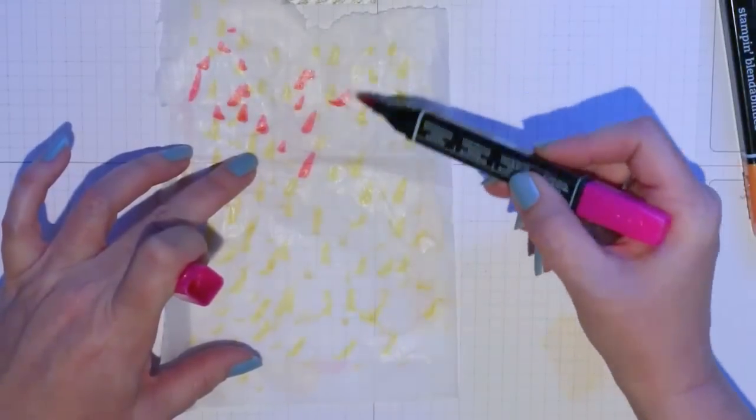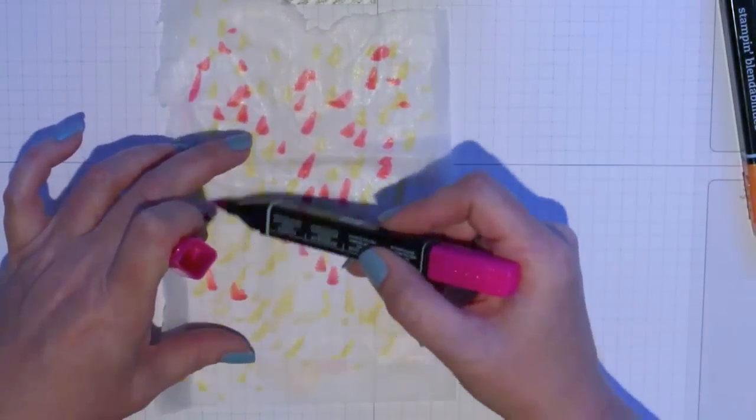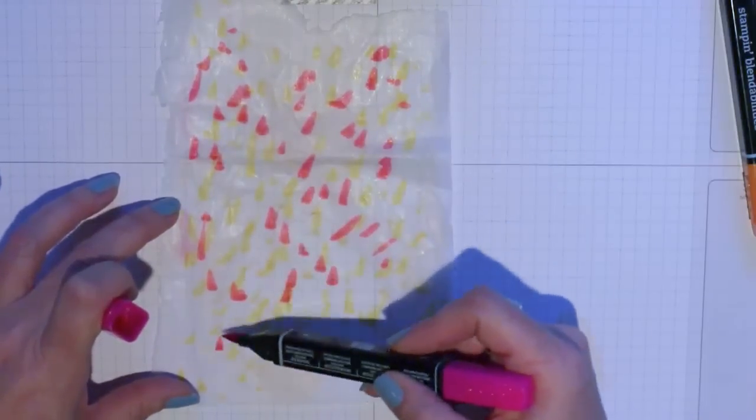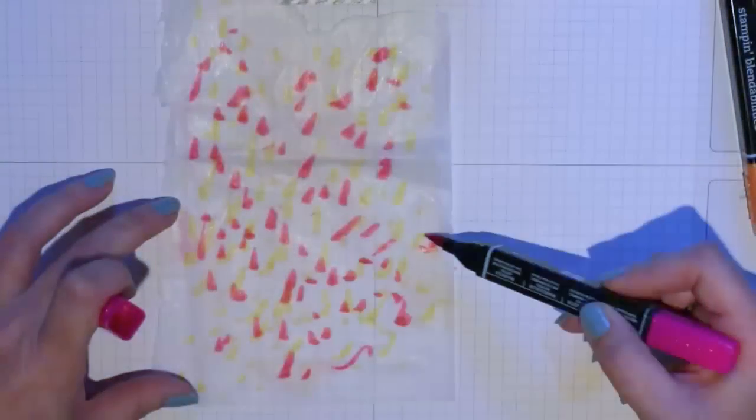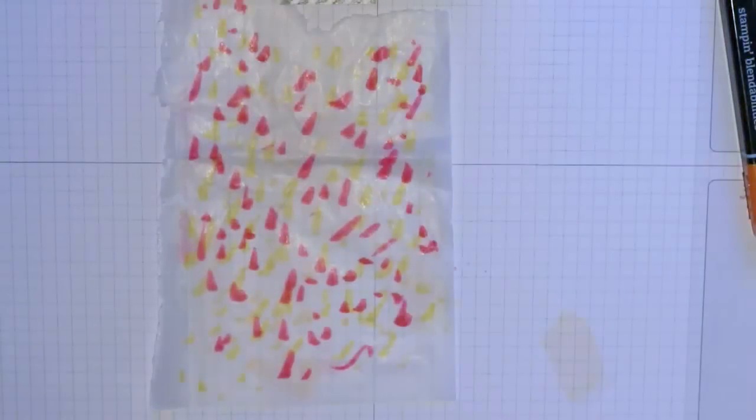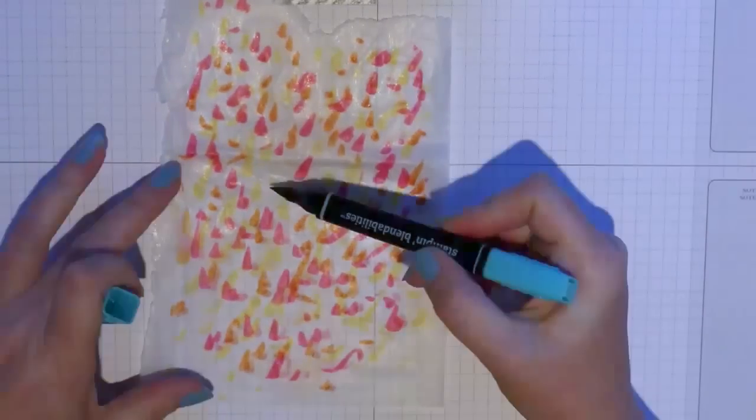Now I do sort of teardrop shaped marks as you can see. I think it gives kind of a little bit more interesting look to those little shapes and I'm not careful, I'm just doing it very quickly. You can also do just perfectly round dots and that might really be fun.